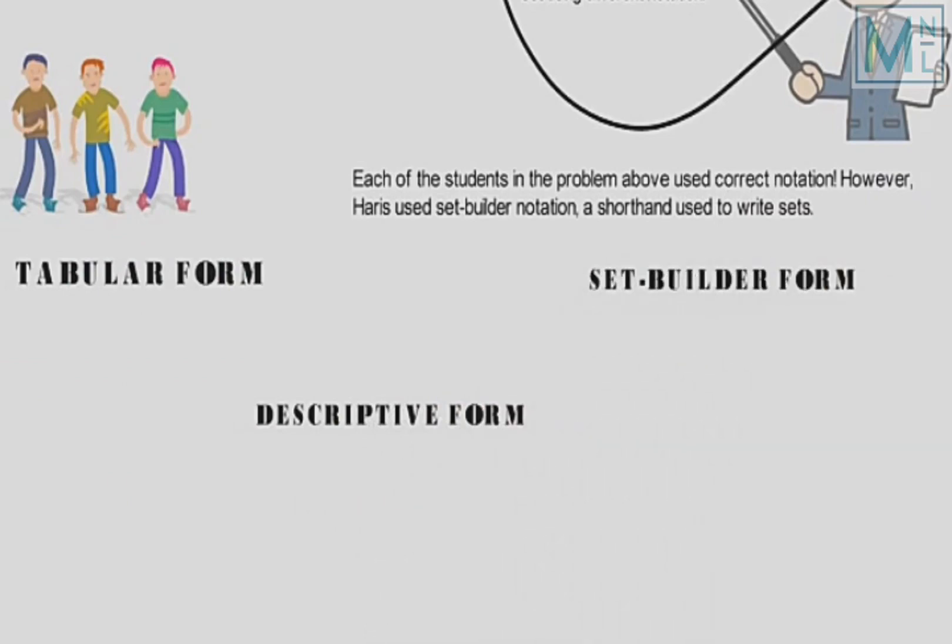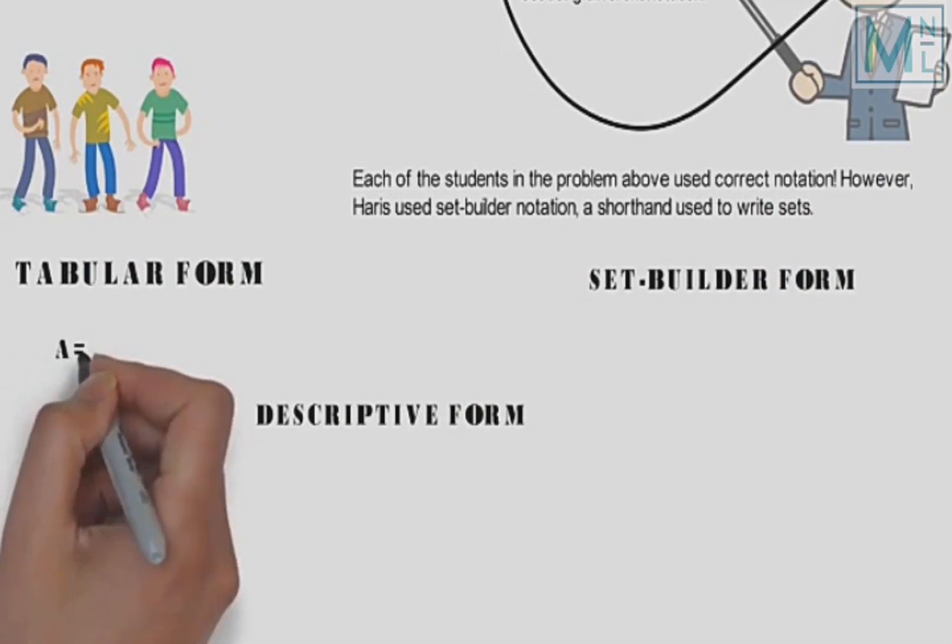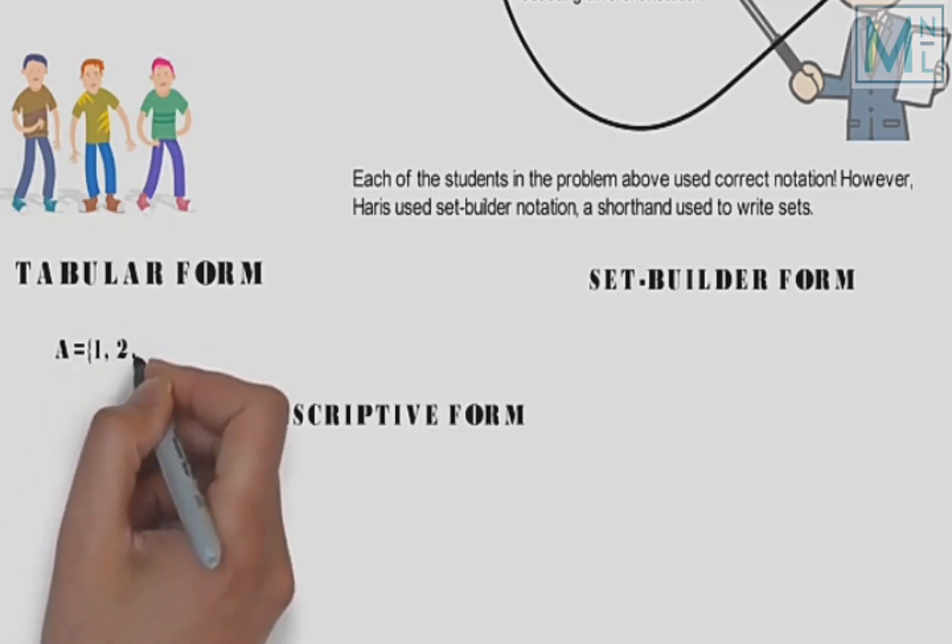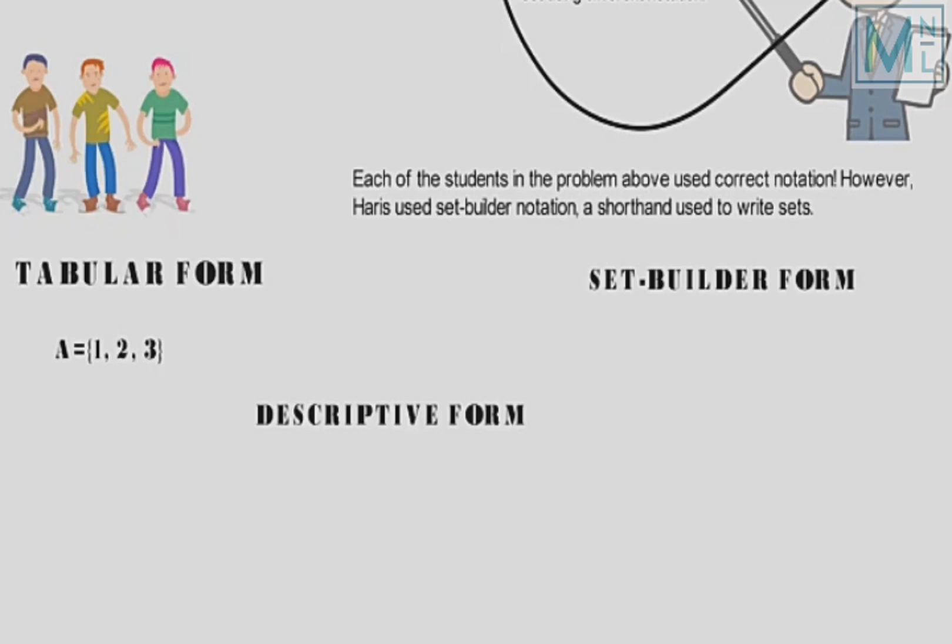Toh hum likhenge: A is equal to curly brackets, jo ke set brackets kailaate hain, one comma two comma three. Aur descriptive form mein isi set ko kuch is tarah present karenge: A is the set of first three natural numbers.